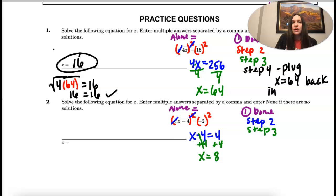Last step is check to see if your solution is extraneous. So what that does is we take the original equation. So the square root of x minus four equals negative two, and I'm going to plug in x equals eight.